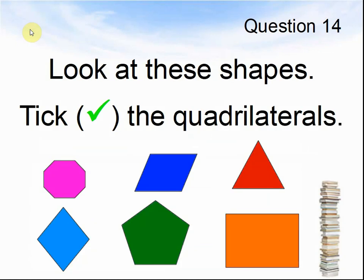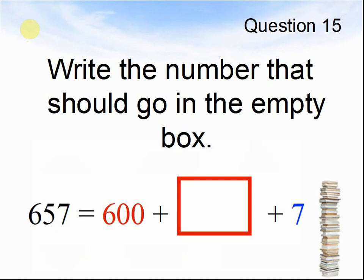Question 14. Look at these shapes — tick the quadrilaterals. Pause the video until you are ready for the next question. Question 15. Write the number that should go in the empty box: 657 equals 600 plus something plus 7. Pause the video until you are ready to answer the next question.